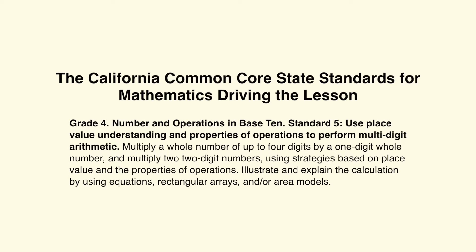The California Common Core State Standards for Mathematics driving the lesson: Grade 4, Number and Operations in Base 10, Standard 5. Students use place value understanding and properties of operations to perform multi-digit arithmetic — multiplying a whole number of up to four digits by a one-digit whole number, and multiplying two two-digit numbers using strategies based on place value and properties of operations. Students illustrate and explain the calculation using equations, rectangular arrays, and/or area models.